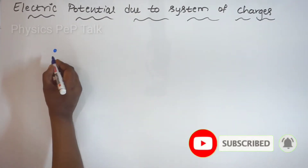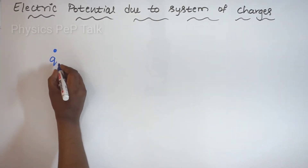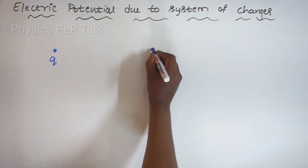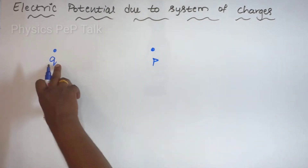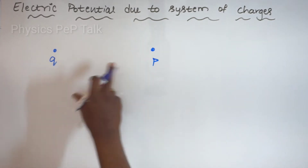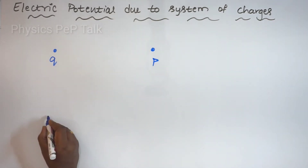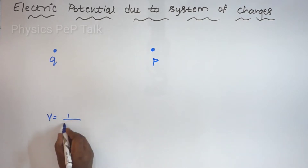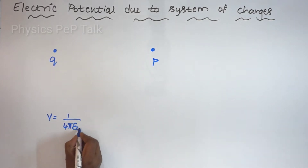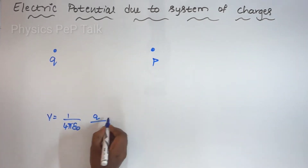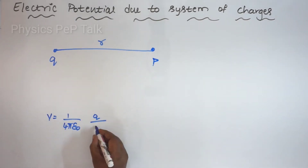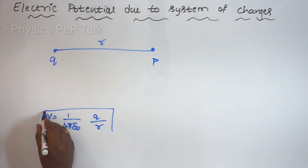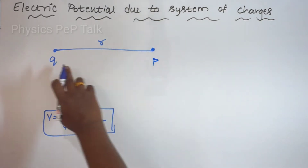In our previous video, we discussed that for one charge — let me call this as Q — and one point P, what is the electric potential at point P due to this charge? That is given by the equation V is equal to 1 by 4 pi epsilon naught, Q by R, where R is the distance of separation between the two. This was the equation for the electric potential at point P due to this charge.